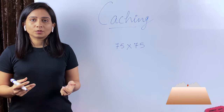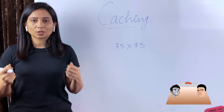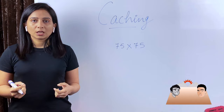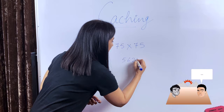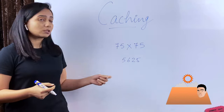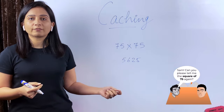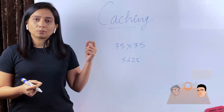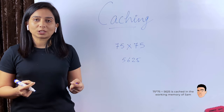Suppose one fine morning you are just chilling and a little cousin who has just started learning multiplication and squares walks up and asks you what is the square of 75. It will take you a few seconds to calculate the answer. But suppose in the evening you get asked the same question again — you will not calculate; you will just directly say 5625. Why? Because the answer you calculated in the morning is now cached in the working memory of your brain. That is the simple concept of caching.